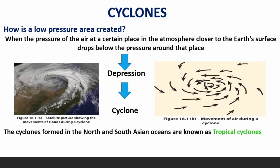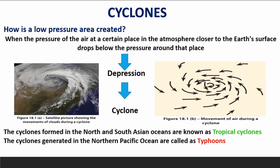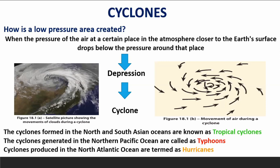The cyclones formed in the North and South Asian oceans are known as tropical cyclones. The cyclones generated in the Northern Pacific Ocean are called typhoons. Cyclones produced in the North Atlantic Ocean are termed as hurricanes.